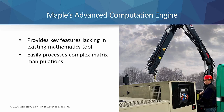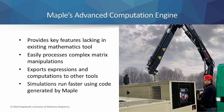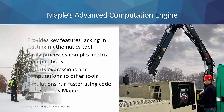Secondly, HIAB's existing mathematics tool was unable to export computations into their existing simulation software. Maple, however, is able to export the computations, and because Maple efficiently optimizes the calculations, simulations run faster using code generated by Maple.